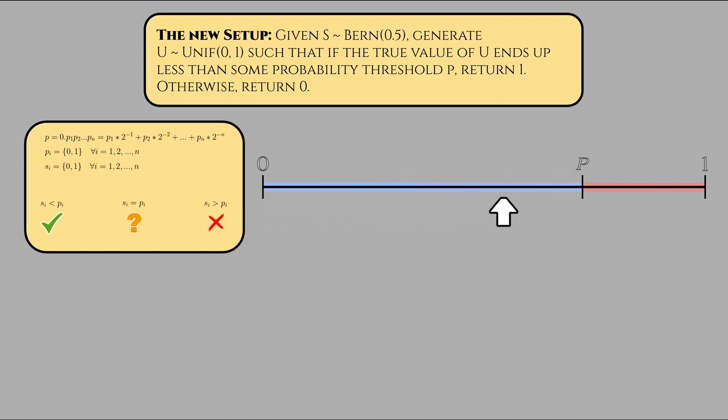Similarly, for the third outcome, our simulated coin flip bit being larger than the corresponding bit in the probability threshold means our simulated coin flip value must be strictly larger than p itself. Remember, we're building the simulated value iteratively, so to get to this point, we've had to have been matching only, which guarantees that in this scenario, this puts us in the red zone, i.e., we must return 0 and have lost the game.